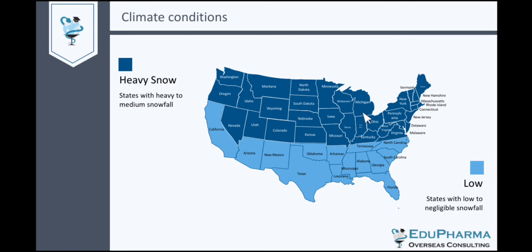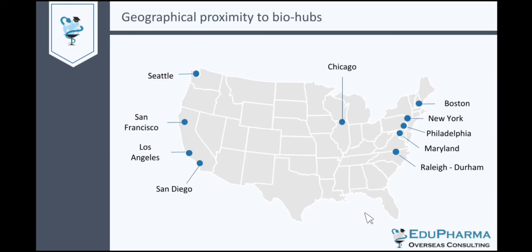So when you are selecting your university, you can look at which state that university is located in, and in that way you would be able to see what the climate conditions could be in that area. Next, you should also consider the geographical proximity to biopharma hubs, which are basically places where there is a lot of industrial activity or pharmaceutical companies located in that area.